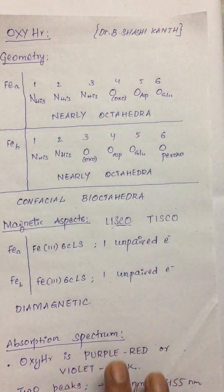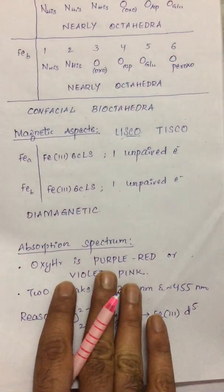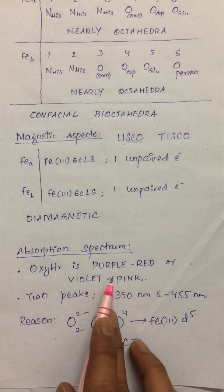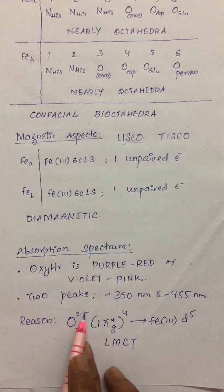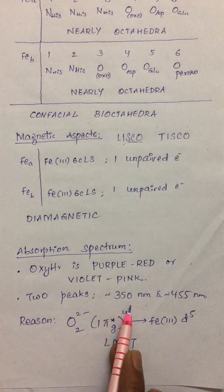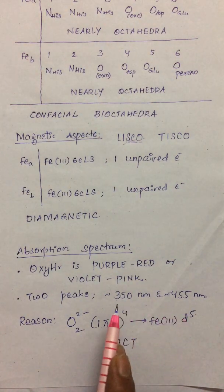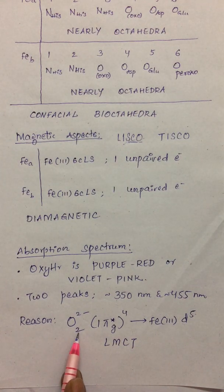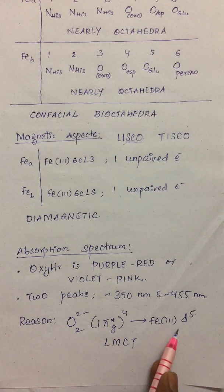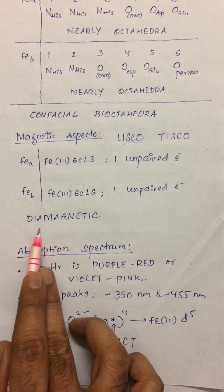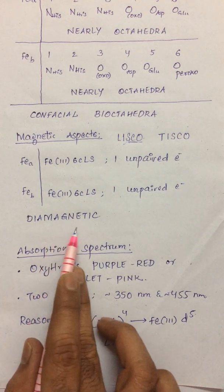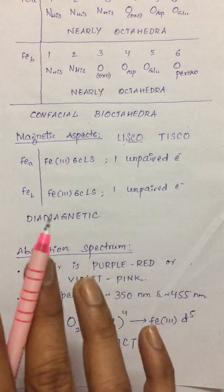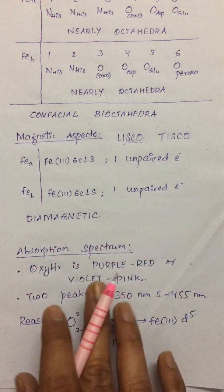Regarding the electronic spectrum, oxyhemerythrin is purple-red or violet-pink colored. Two peaks can be seen in the absorption spectra: one at 350 nm and the other at 455 nm. The color arises from a ligand-to-metal charge transfer (LMCT) transition from the peroxo to iron(III) with a d5 configuration. Confirmation of diamagnetic behavior also comes from EPR spectroscopy, where oxyhemerythrin is found to be EPR/ESR silent.